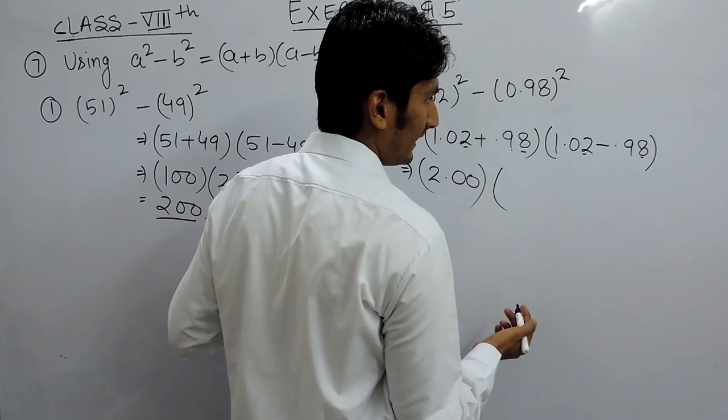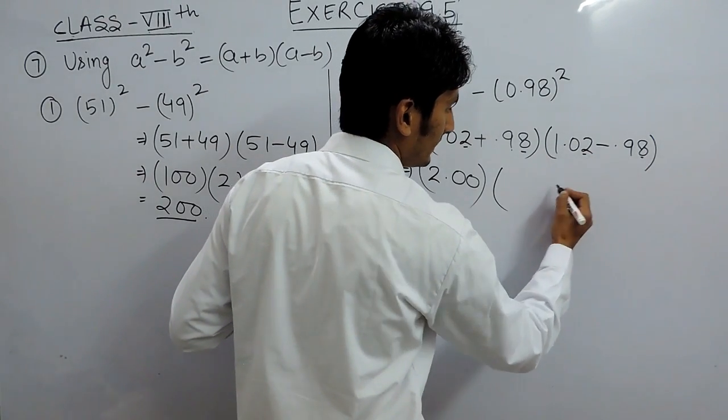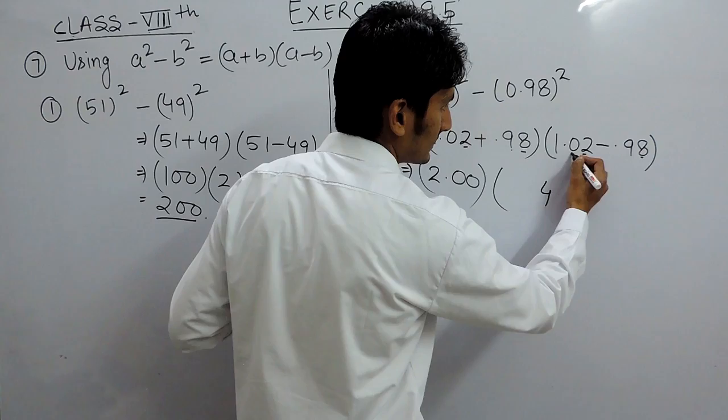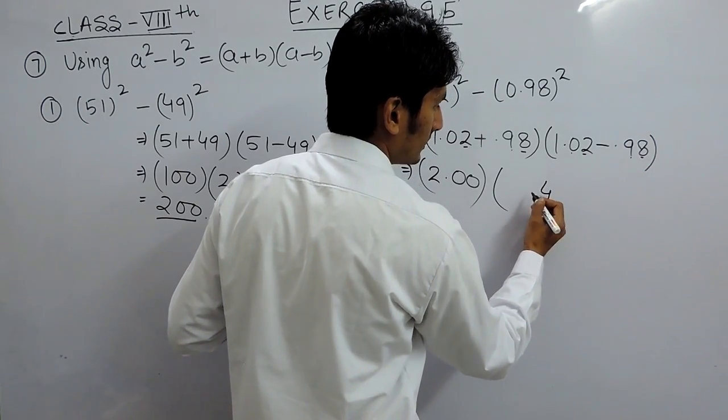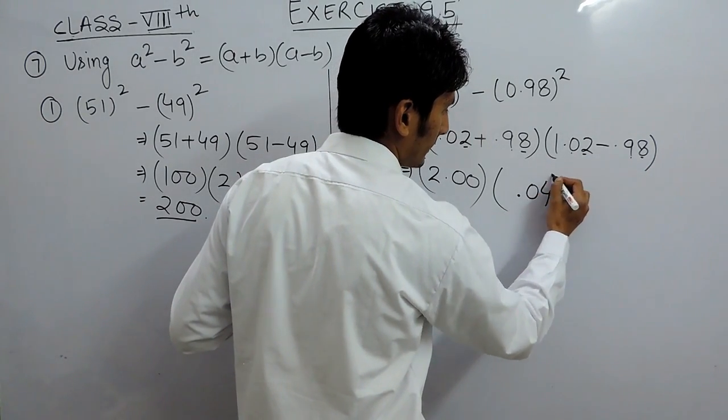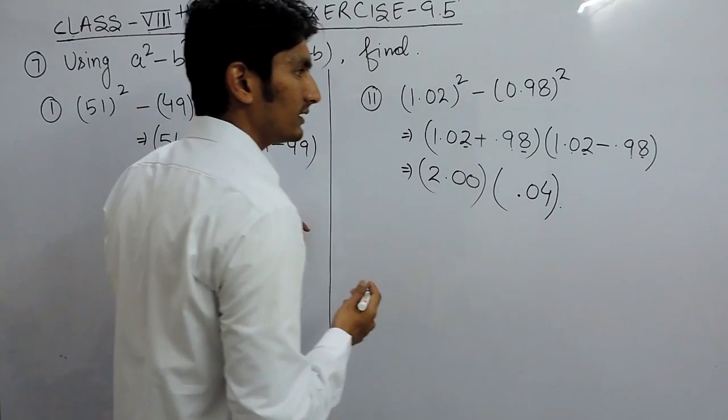2 minus 8 - so 12 minus 8 is 4. Here it is 9, so 9 minus 9 is 0. So, this will become 0.04.